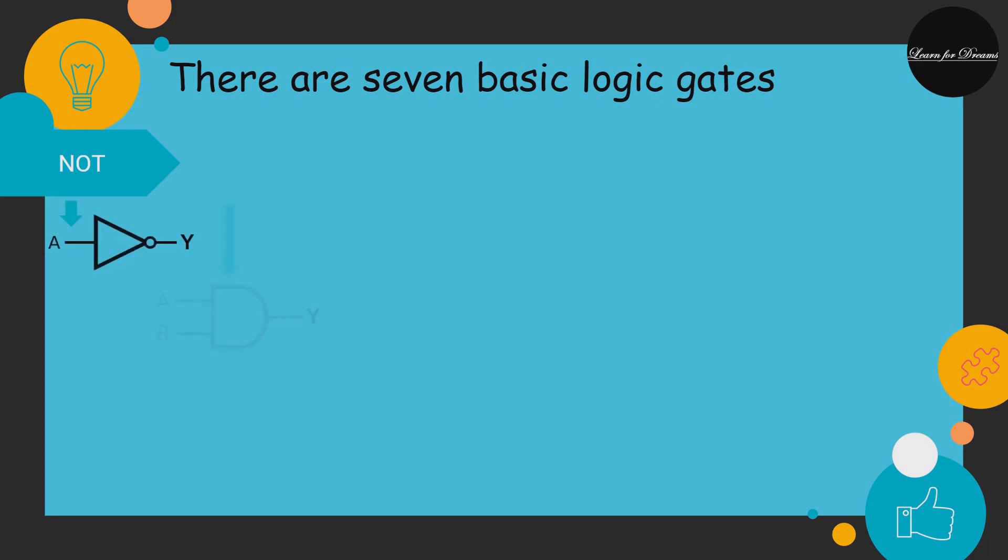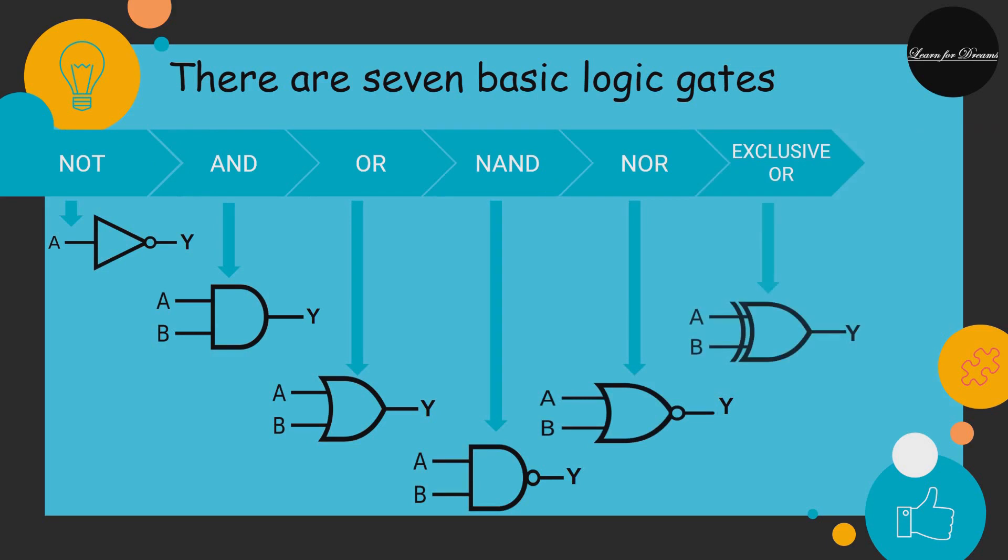There are seven basic logic gates: NOT gate, AND gate, OR gate, NAND gate, NOR gate, EXCLUSIVE OR gate, and EXCLUSIVE NOR gate.